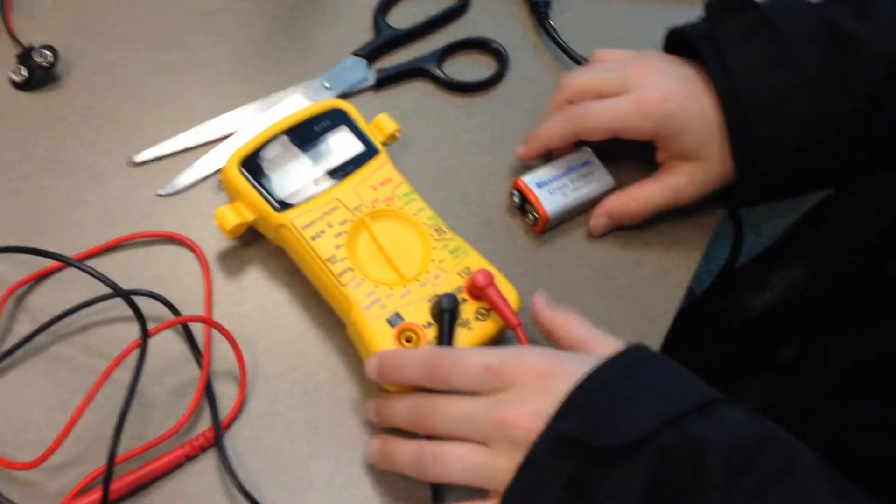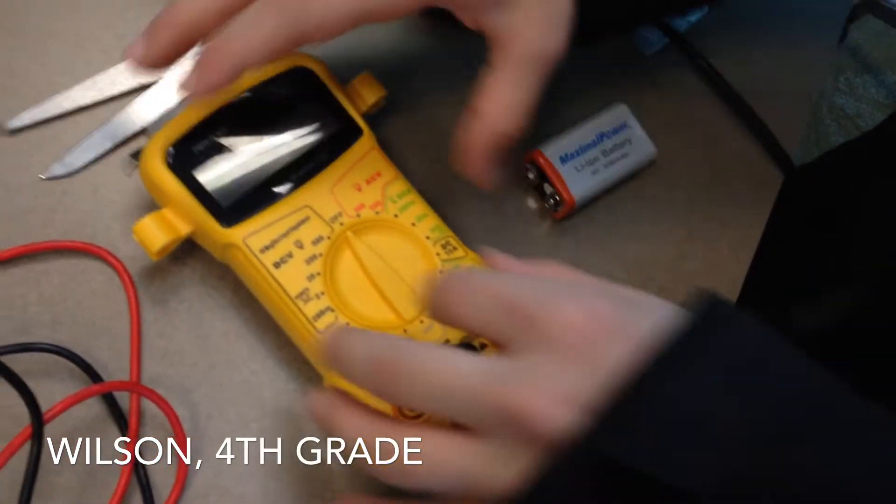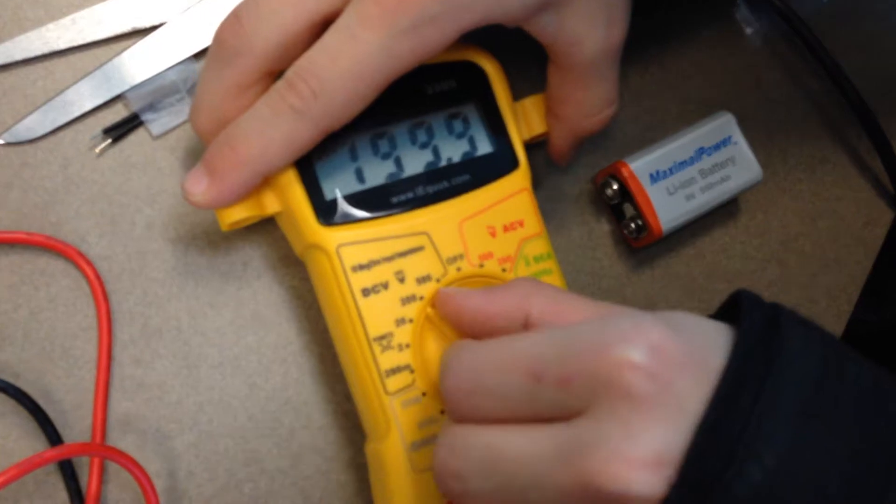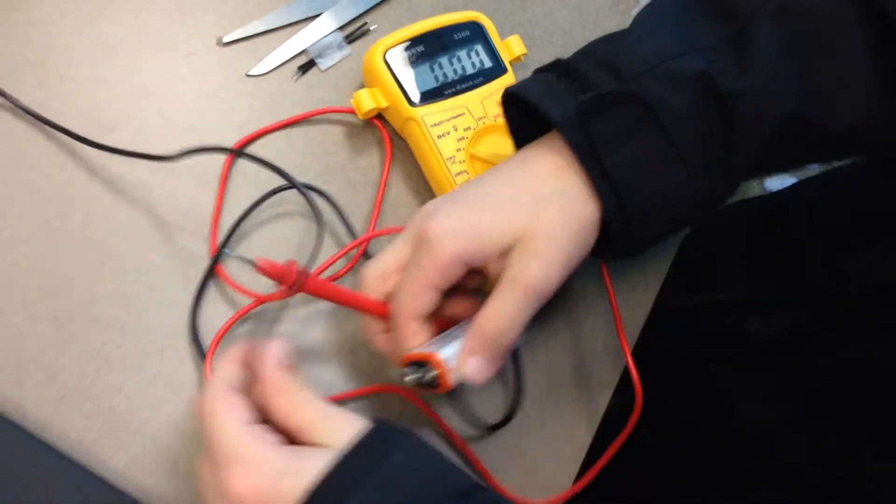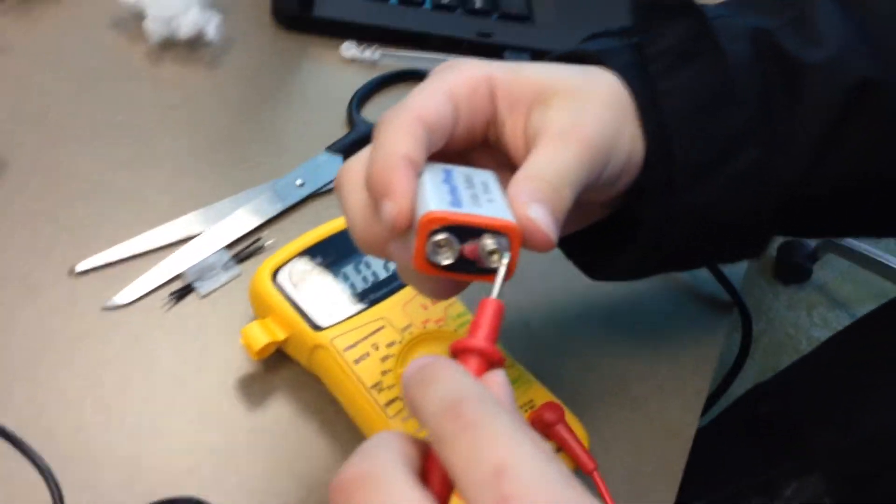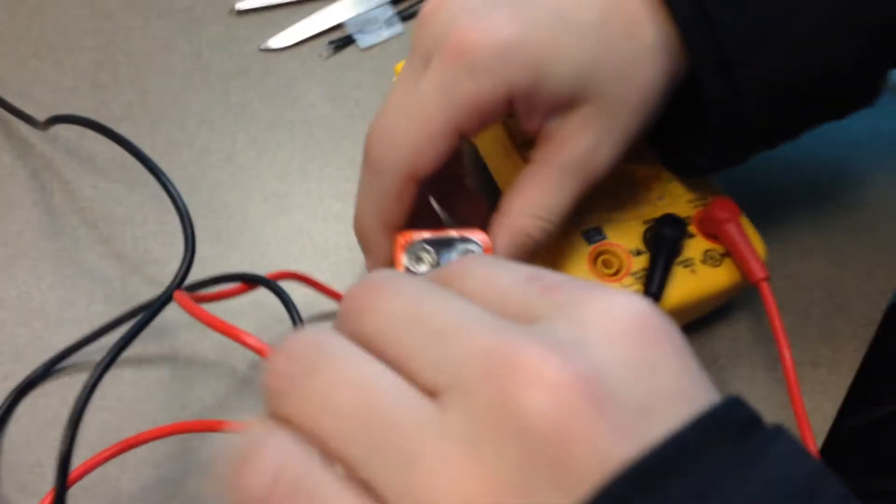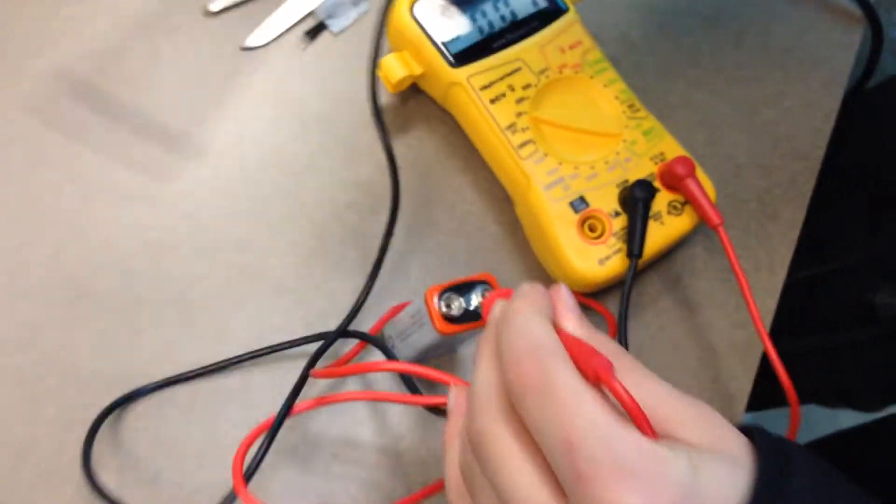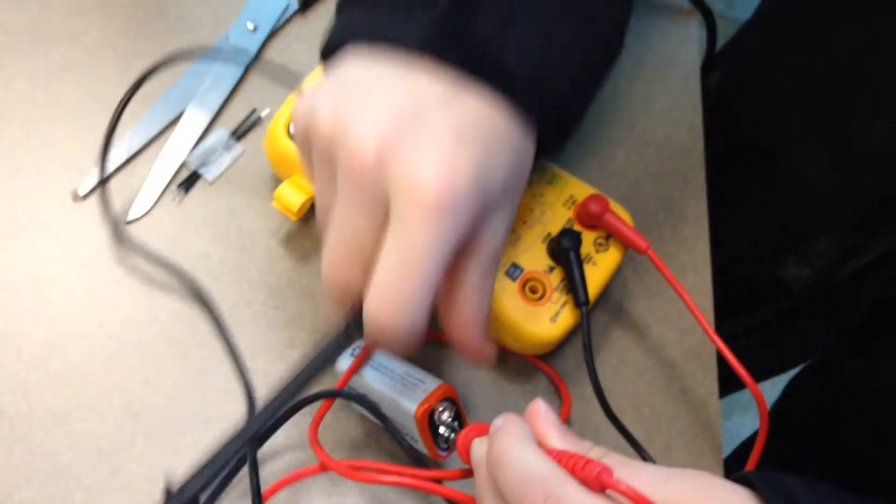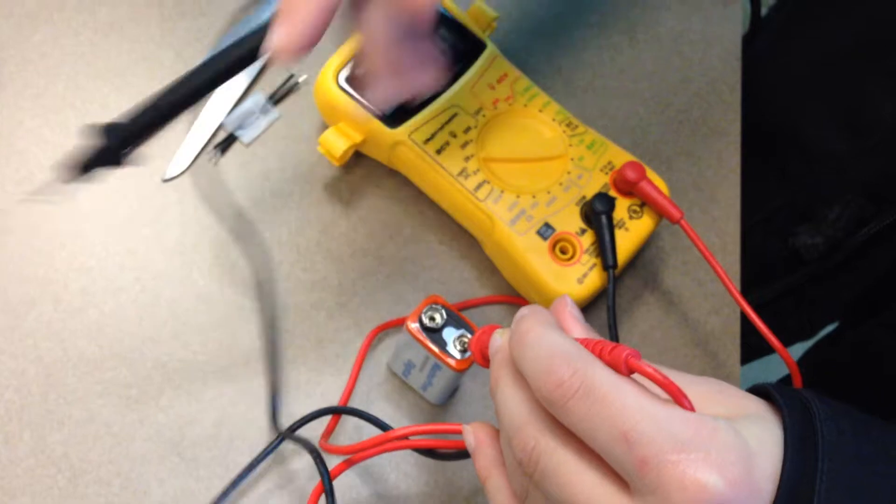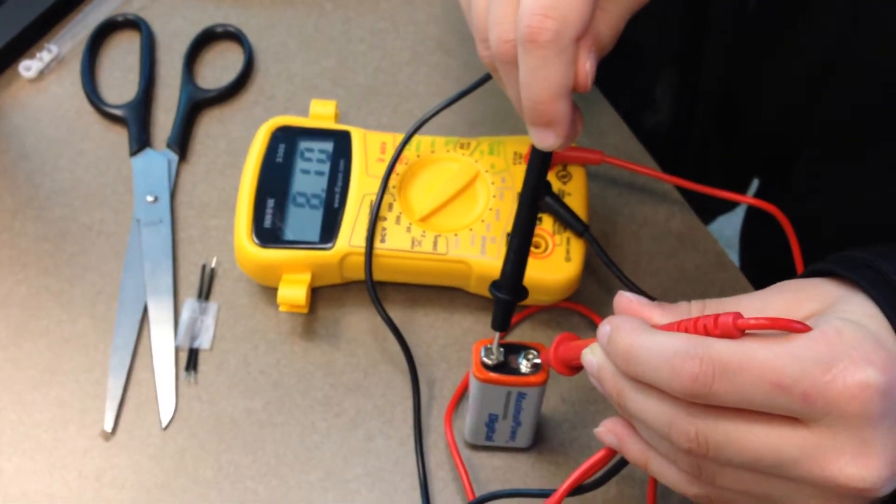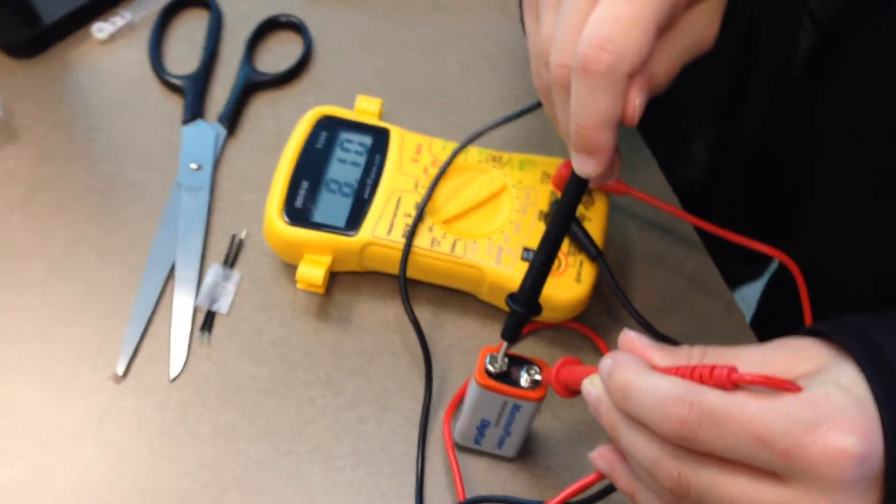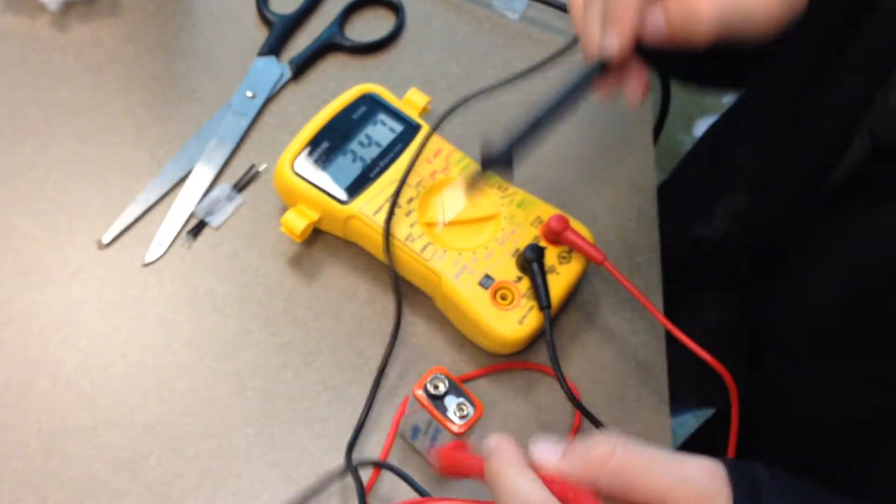So if you're gonna measure a 9-volt battery, you're gonna wanna switch it to 20. And put the red on the circle on the positive, and then the black on the positive. And it has 8.10 volts.